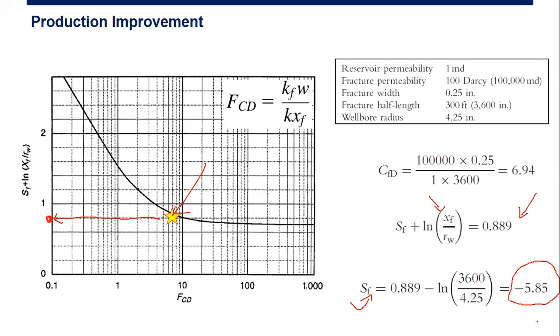Okay, so the skin factor, if it is positive, it means formation damage. It will decrease your flow rate. But if we have negative skin factor, then it will be stimulation. It will improve, increase your productivity.